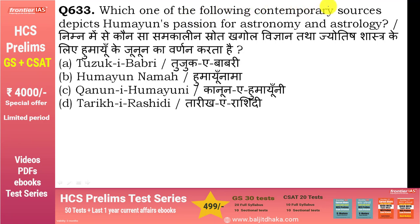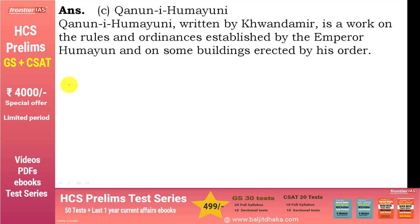Which contemporary source depicts Humayun's passion for astronomy and astrology? Humayun Nama contemporary source नहीं हो सकता क्योंकि Humayun की death के बाद Gulbadan Begum ने Akbar के कहने पर लिखा था। Correct answer है 'Qanun-e-Humayuni'। इसे Khwandamir ने लिखा था। इसमें Humayun के rules, ordinances और buildings का जिक्र है।